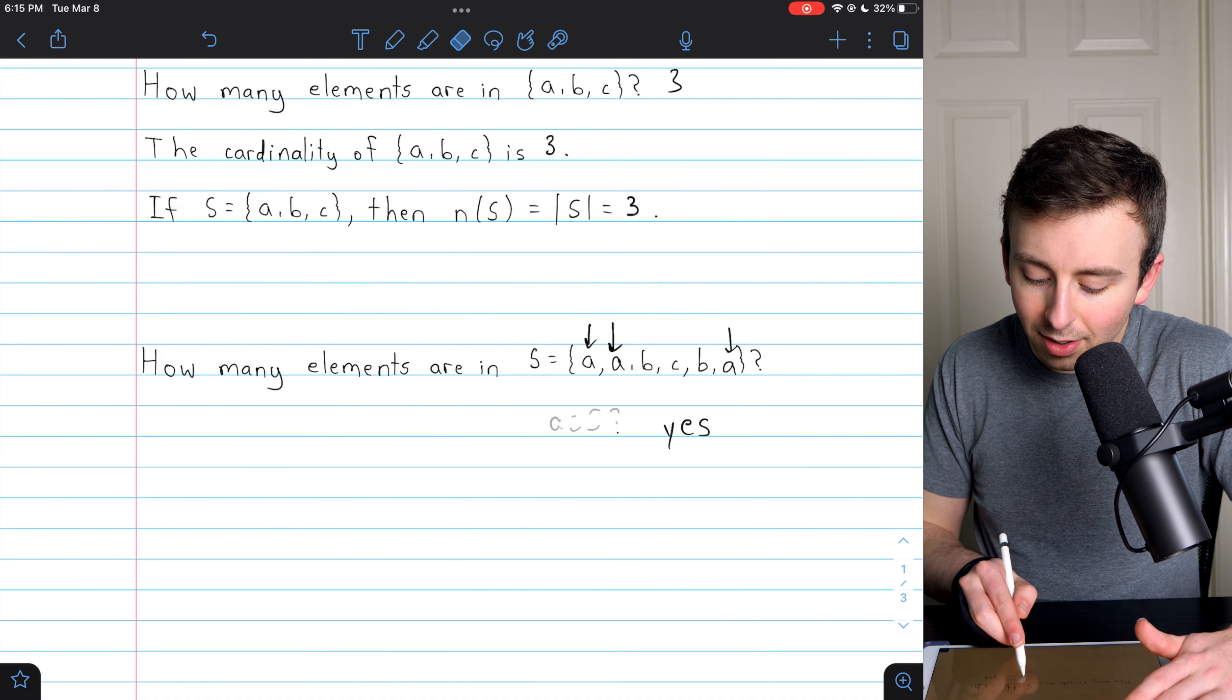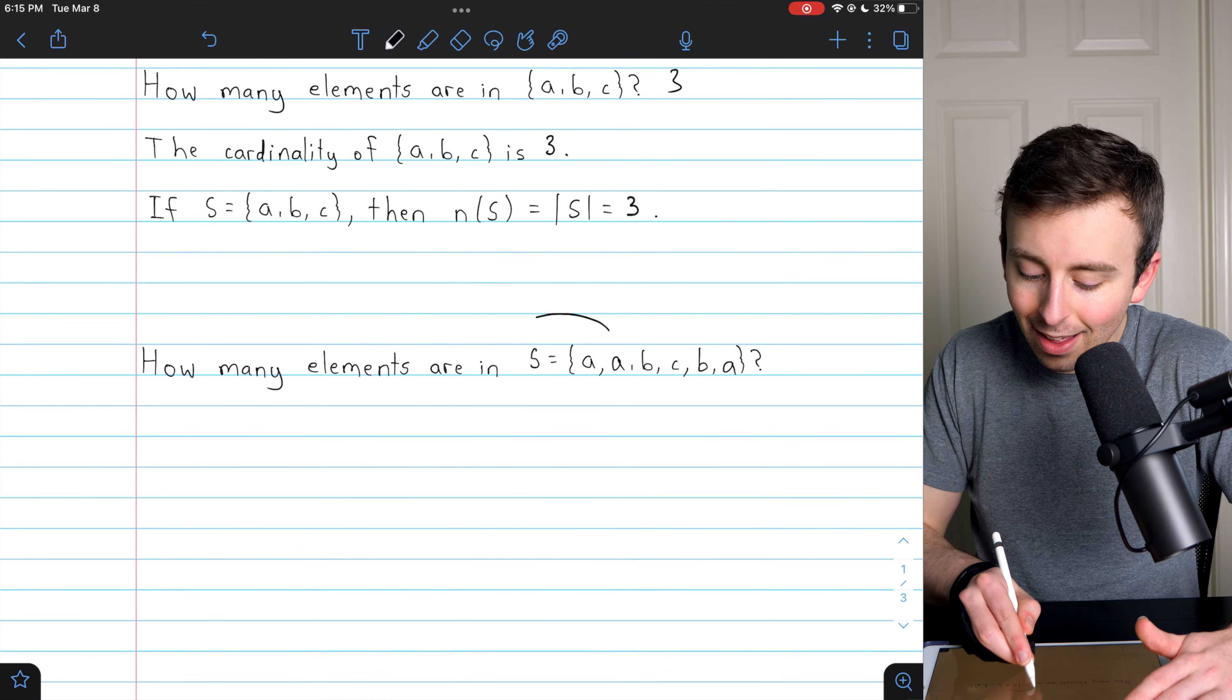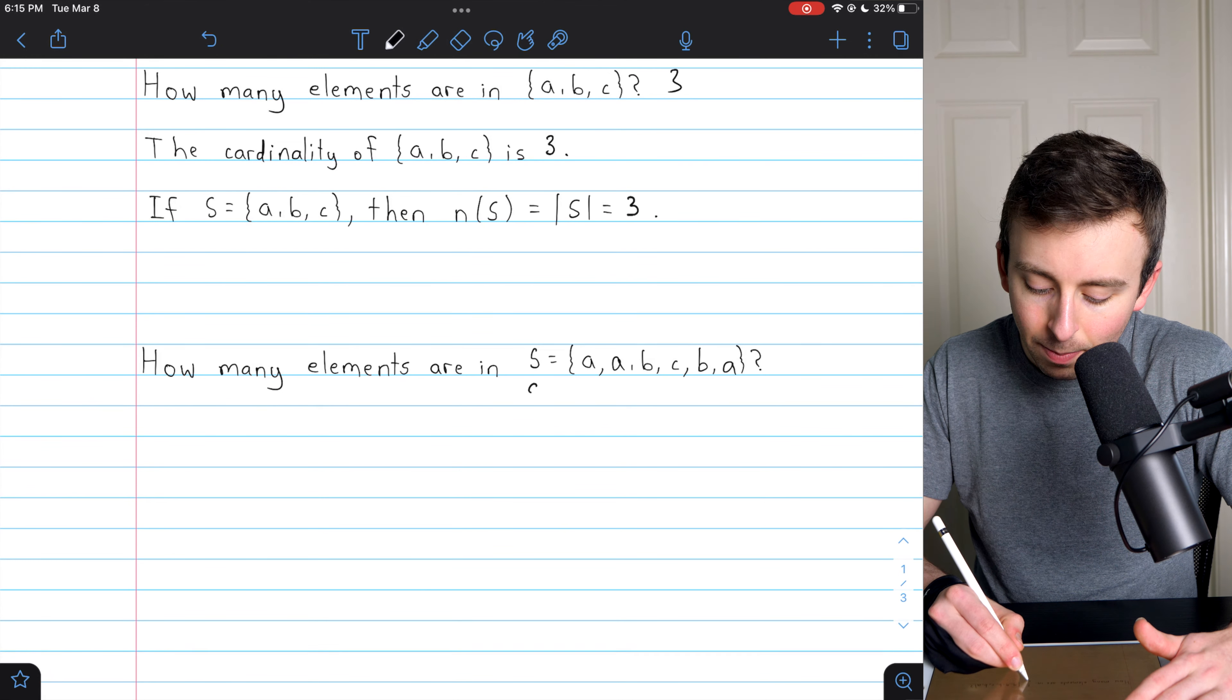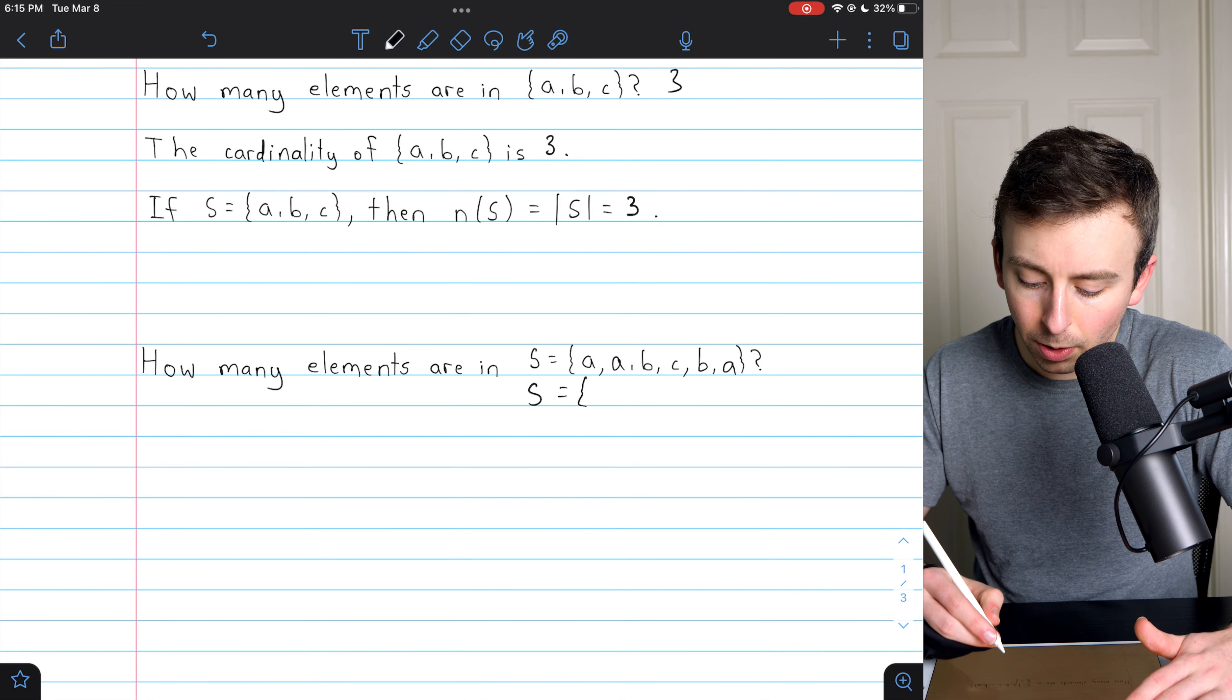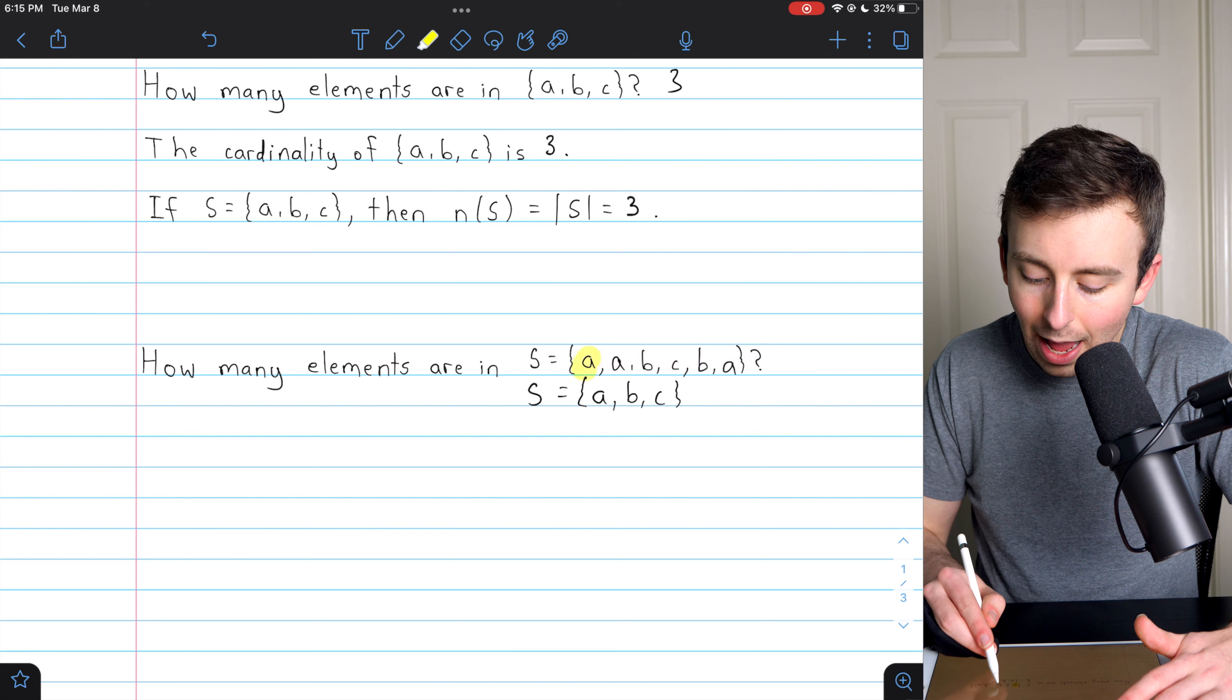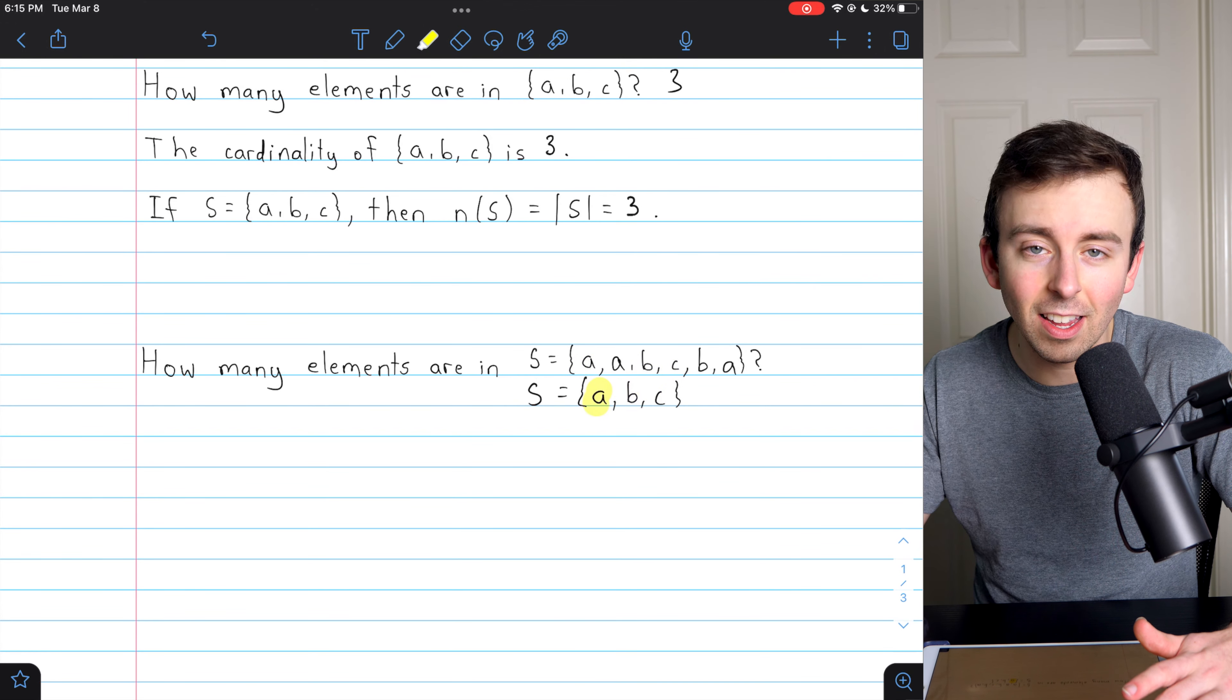So when we're writing out sets, since they are not concerned with duplicate elements, they really should not be written with duplicate elements. There is nothing inherently wrong with this, but if nothing else, it could at least be considered bad form. So S, if it's equal to this set, by definition of a set, it's also equal to that set rewritten without the duplicate elements. The elements of this set are A, B, and C. Those are the distinct elements of the set. And the elements of this set are A, B, and C as well. So they are the same set.